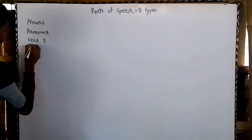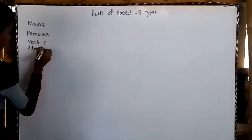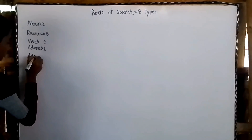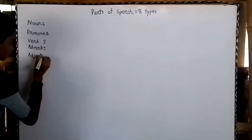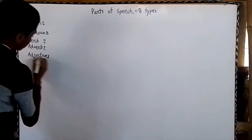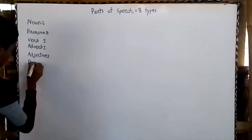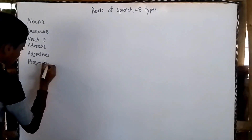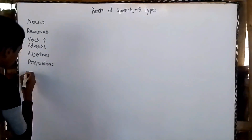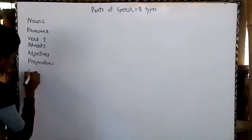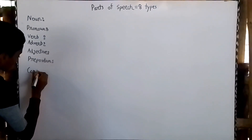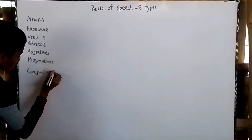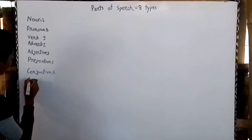The eight parts of speech are: noun, pronoun, verb, adjective, preposition, conjunction, and interjection.